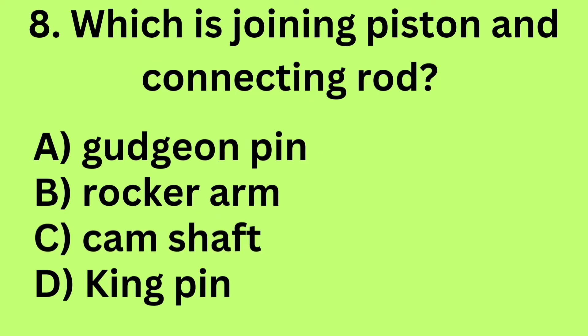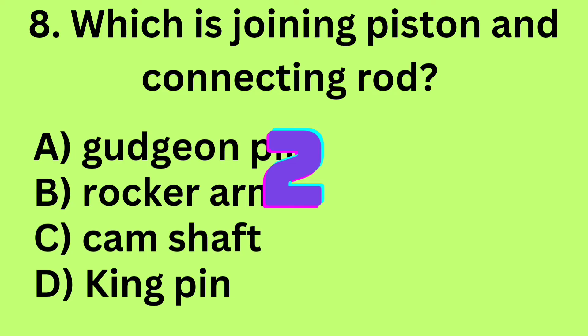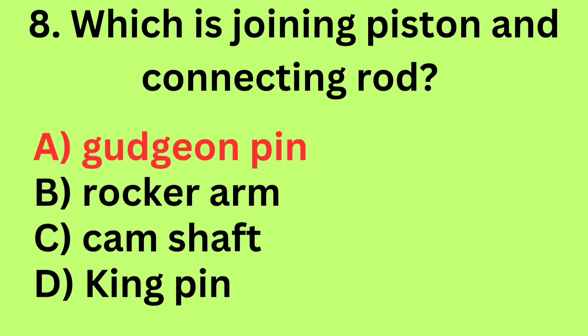Question 8: Which is joining piston and connecting rod? A. Gajun pin, B. Rocker arm, C. Camshaft, D. King pin. Answer: A. Gajun pin.